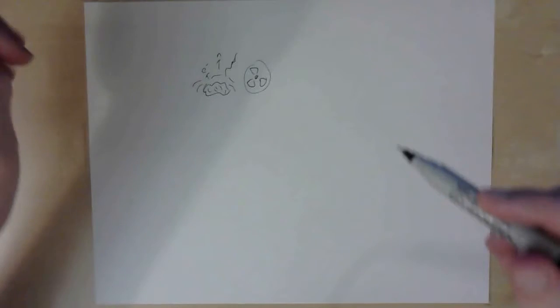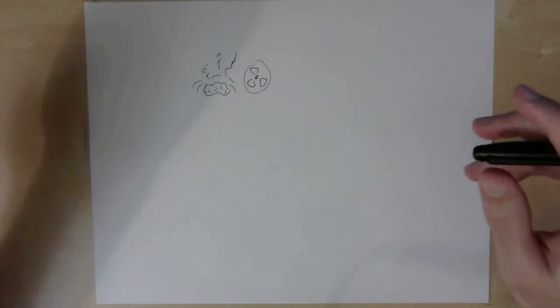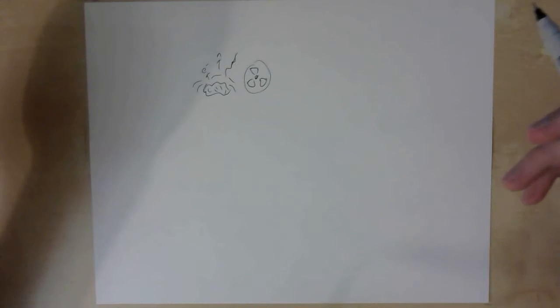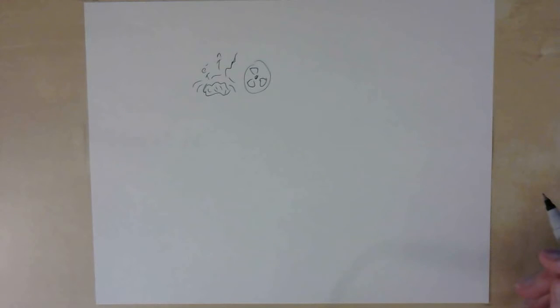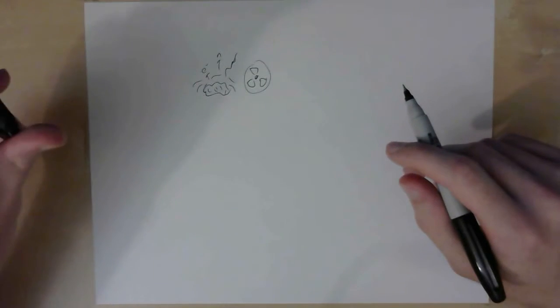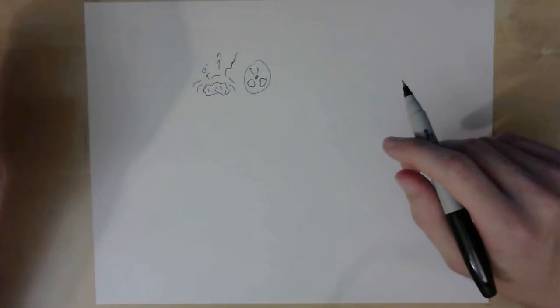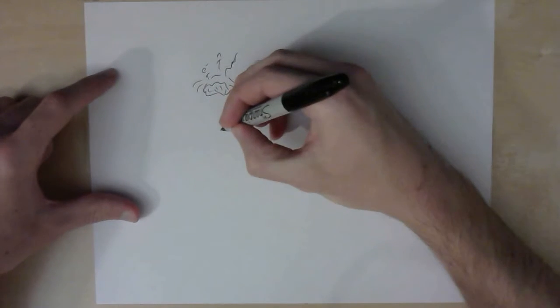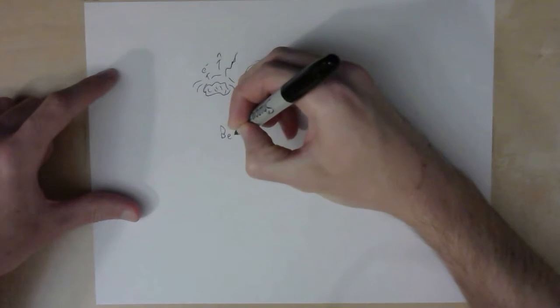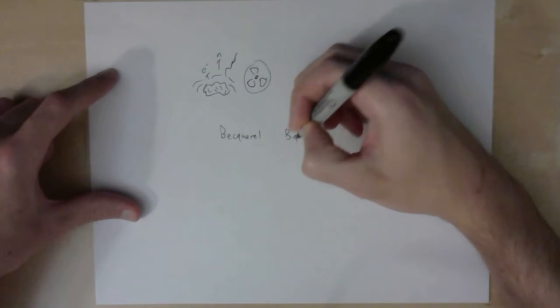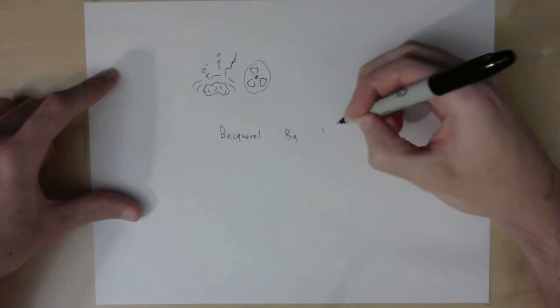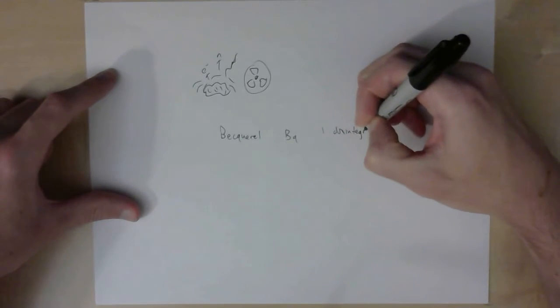So this is how many decays occur per unit time in a radioactive sample. So basically what a decay is, is when unstable atoms emit one or more particles to reach a stable energy. That's all radiation is. It's just a way for atoms to get to a more stable energy. And nature always wants to get to a more stable position. So it has SI units of Becquerels, who is probably some physicist, abbreviated to BQ.